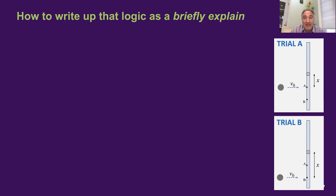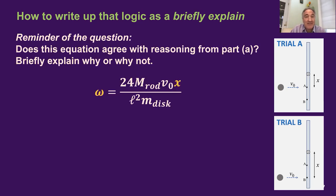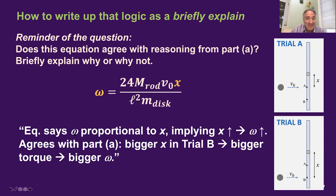How in the throes of an AP Physics 1 exam could you write up that full logic to answer a 'briefly explain' type question? Here's how you can write it up very briefly: 'Equation says omega proportional to X, implying if X goes up, then omega goes up. Agrees with part A: bigger X in trial B led to bigger torque, led to bigger omega.' That's briefly summarizing all the relevant reasoning in a way that shows you understand what you're talking about.